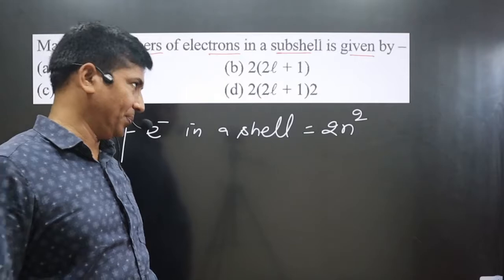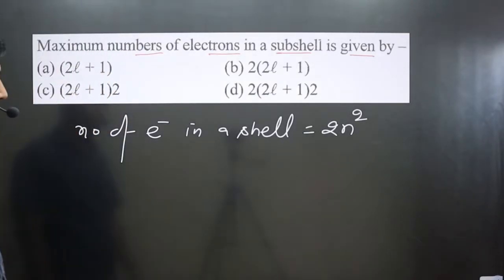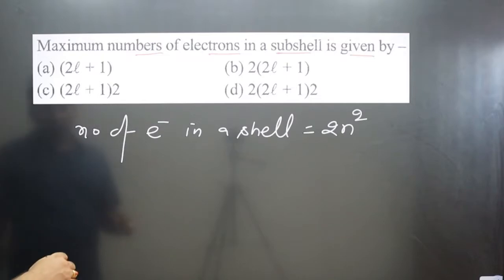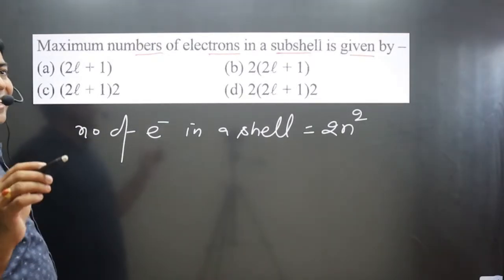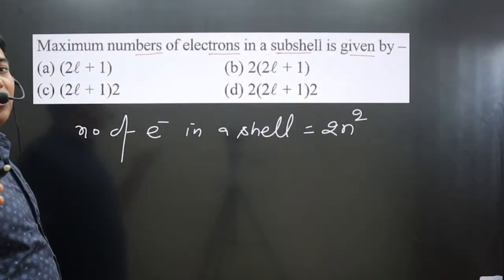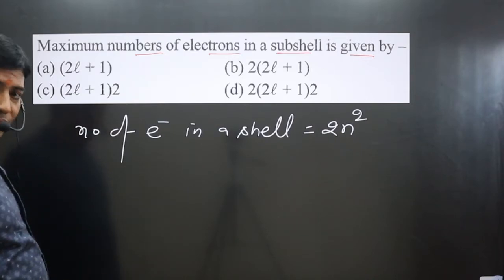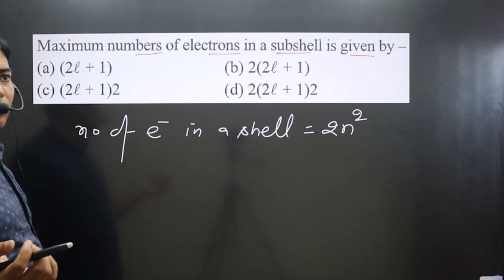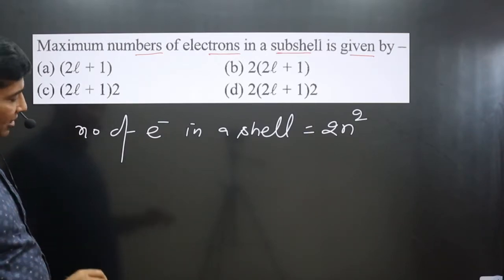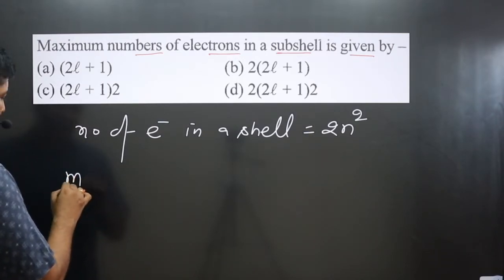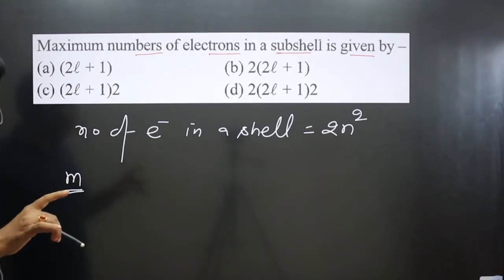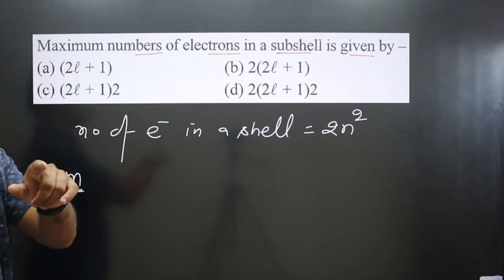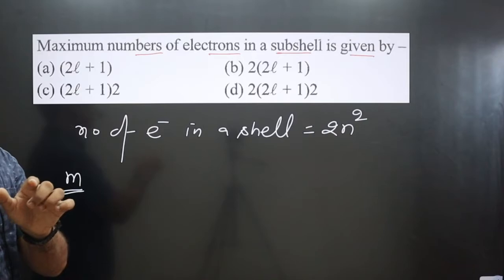The magnetic quantum number M is used to determine the number of orbitals. M depends on the L value. L is used to determine the subcell, and M is used to determine the number of orbitals present in a subcell.